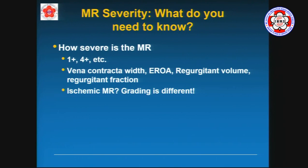What do we need to know from a mitral regurgitation severity standpoint? First, how bad is the MR — you can grade it as 1+, 2+, 3+, up to 3 to 4+, or use mild, moderate, severe, moderately severe. By echo, we use the methods I just described, which translate into terms like vena contracta, effective regurgitant orifice area, and so forth. These all have their strengths and weaknesses and are used in different settings.